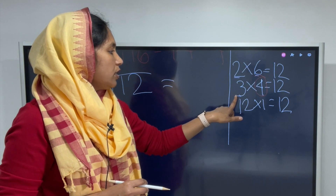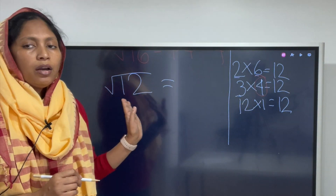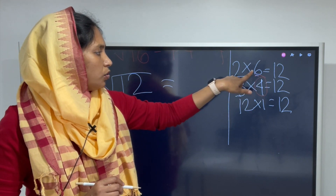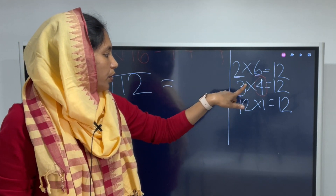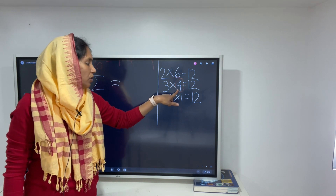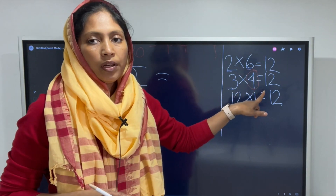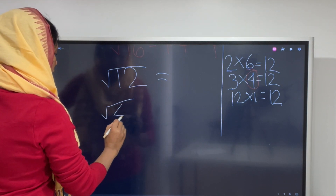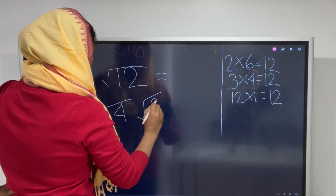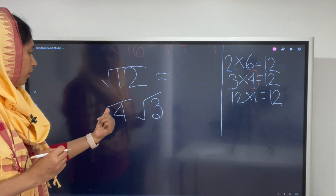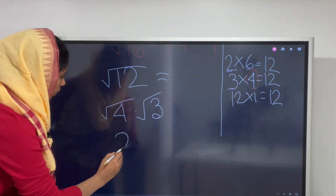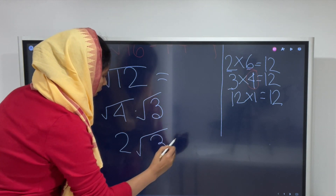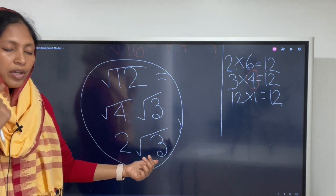So we break down 12 as 3 times 4. Since 4 is the perfect square number in this pair, we use it: square root of 12 equals square root of 4 times square root of 3. Square root of 4 is 2, and we cannot simplify square root of 3, so we keep it as is. Our final answer is 2 square root of 3.